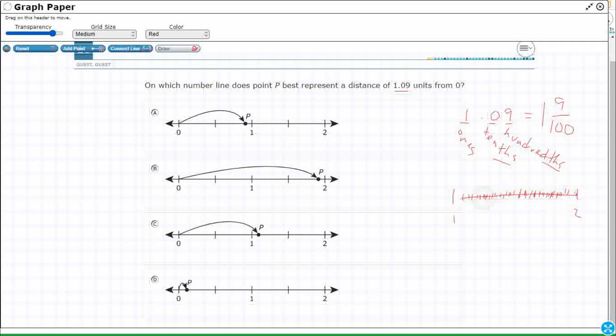It's not going to be that far. 9 marks might be like this far. 50 marks. This is 1 and 50 hundredths or 1 and 50 hundredths.